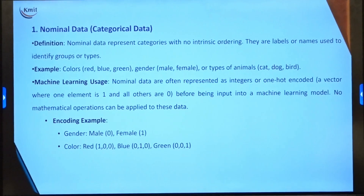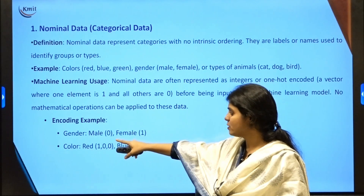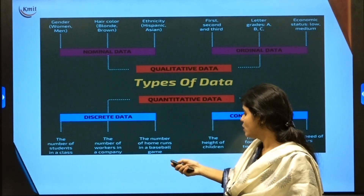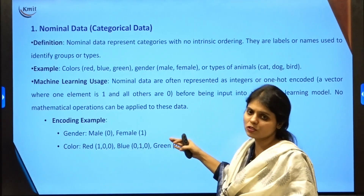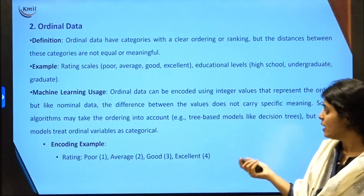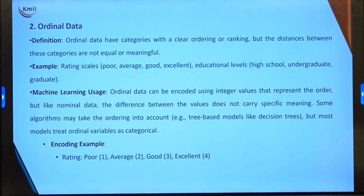Nominal data represents categories as labels with no ordering — colors, gender, animals, etc. In machine learning, if we have two categories like gender we use binary representation: 0 or 1. For multiple categories such as red, green, blue, we use one-hot encoding: red is [1,0,0], blue is [0,1,0], and green is [0,0,1]. Ordinal data has categories with clear ordering — poor, average, good, excellent. It is encoded using integer values in lower-to-higher or higher-to-lower order, and is particularly used in decision tree algorithms.